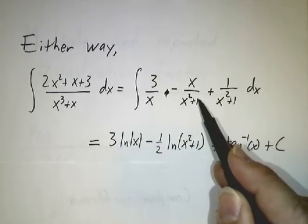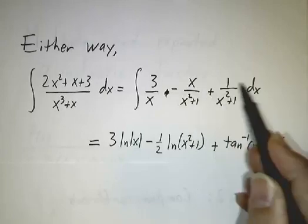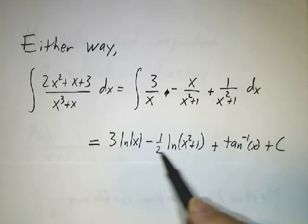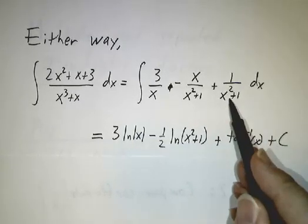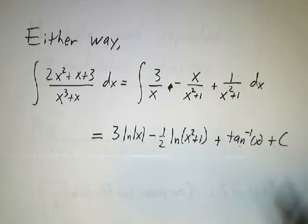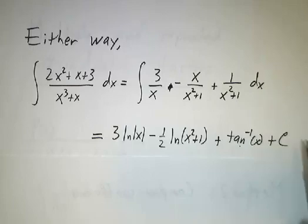The second term, we do a u substitution, let u equals x squared plus 1, so du is 2x dx, and we get 1 half of the natural log of x squared plus 1. And this, we remember, is we get an arctangent, and then we get a constant, and this constant is not the constant c that we had before, but we always use c for our arbitrary constant.